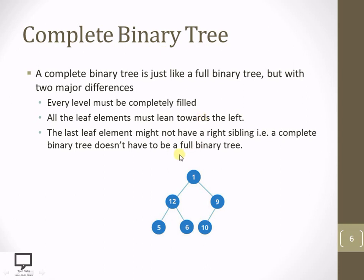While inserting nodes one by one, if the last node is only the left child of its parent and no right child is available, it is allowed in a complete binary tree. In this example, node 1 has two children, node 12 has two children, but node 9 has only a single child — and that single child must be the left child. No right child is allowed if the left child is not present. This is the main condition of a complete binary tree.